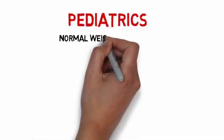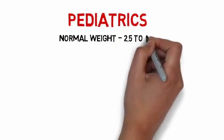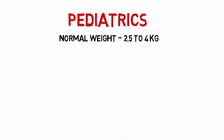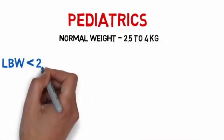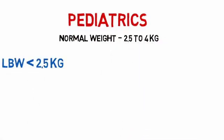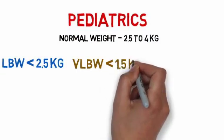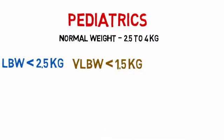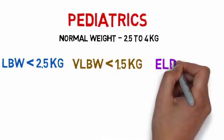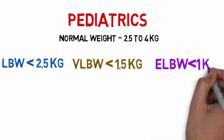The normal birth weight is 2.5 to 4 kg. Low birth weight is less than 2.5 kg. Very low birth weight is less than 1.5 kg and extremely low birth weight is less than 1 kg.